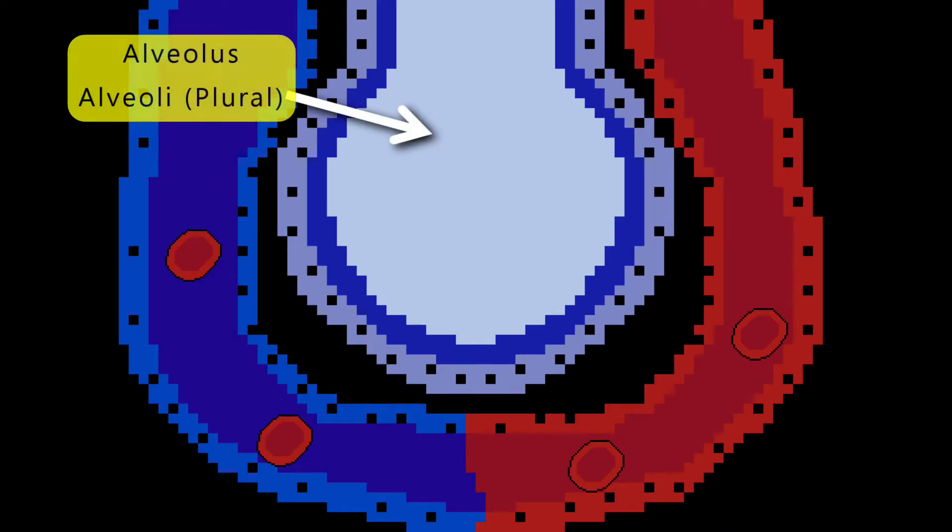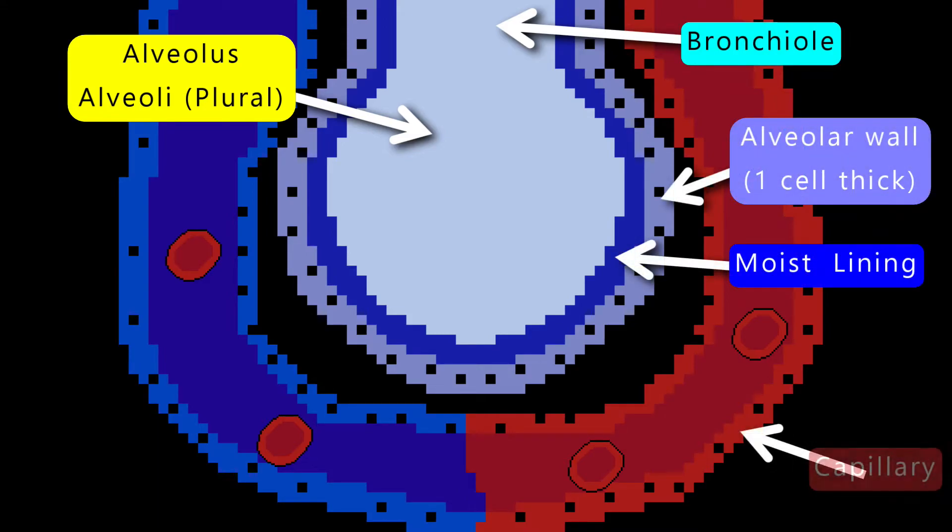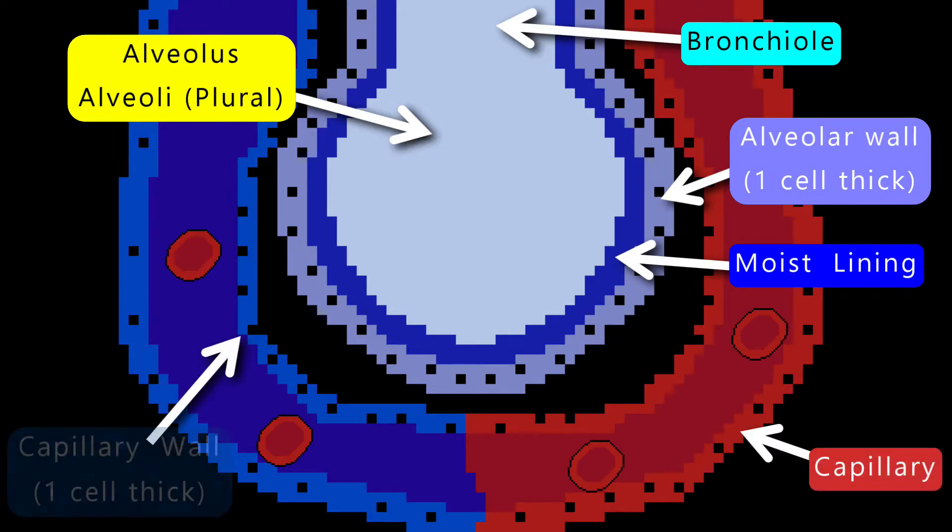You need to be able to label the alveoli. The tube leading into the alveoli is a bronchiole. The wall of the alveolus has a thin moist layer. The capillaries, which are blood vessels, surround the alveolus. The capillary wall is one cell thick.